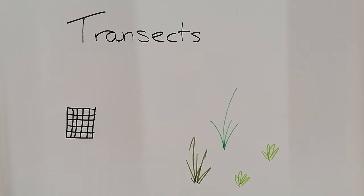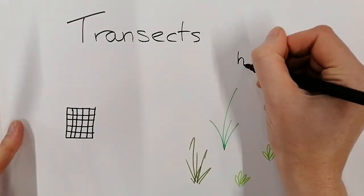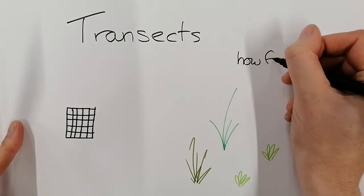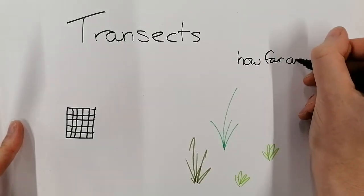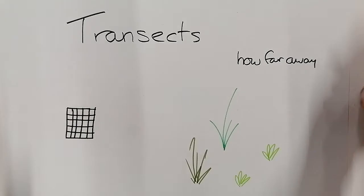Now we normally would do a transect when we're asking a very specific question. A transect is about a where question or how far away. How far away from the beach will you start getting plant life?